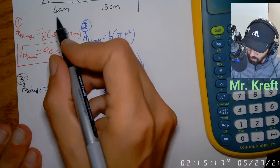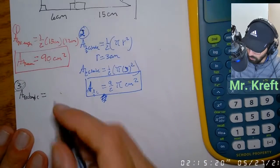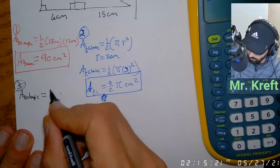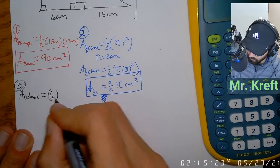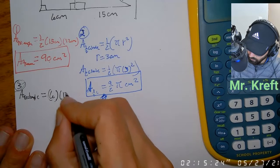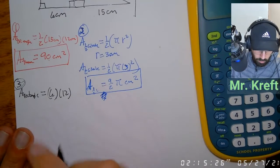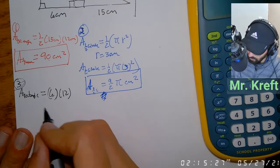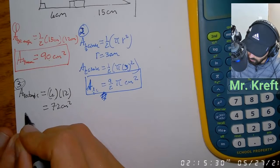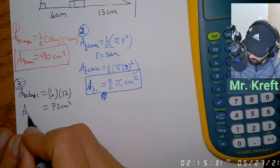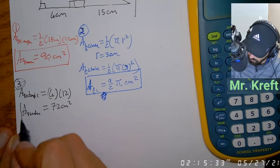The area of the rectangle is just length times width, so that's 6 times 12, which gives us 72 centimeters squared. Always include the units.